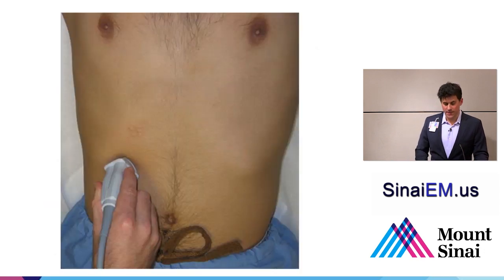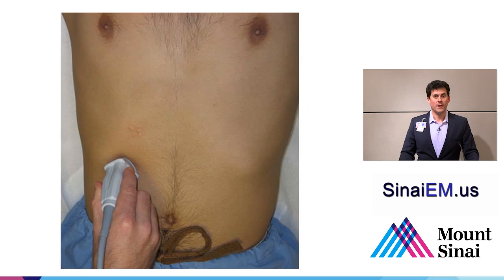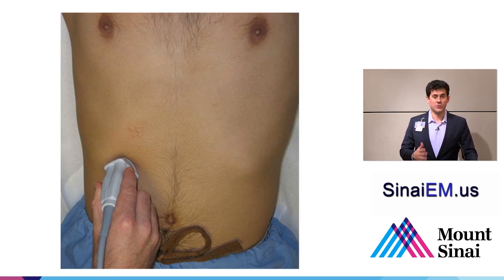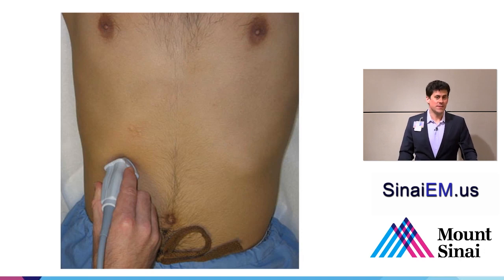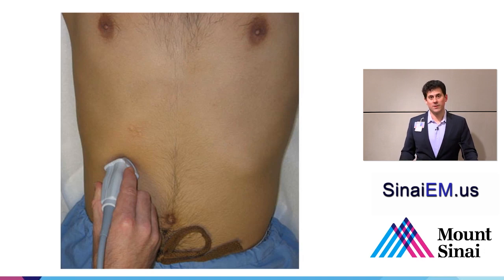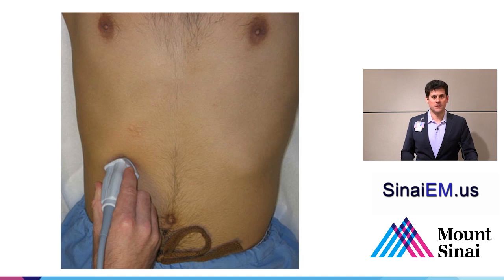Typically we're going to hold the probe at the costal margin around the mid-clavicular line. Most people describe doing a costal sweep, with the probe in a longitudinal or sagittal orientation, sweeping from left to right along the costal margin. In my experience, the gallbladder is often obscured below the costal margin by bowel gas, and in heavier patients it can be difficult to get through skin and soft tissues. So while the costal sweep approach is helpful, understanding where the gallbladder sits makes it a little easier to find using a slightly different approach.